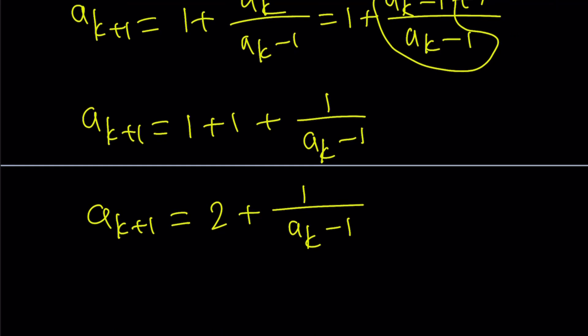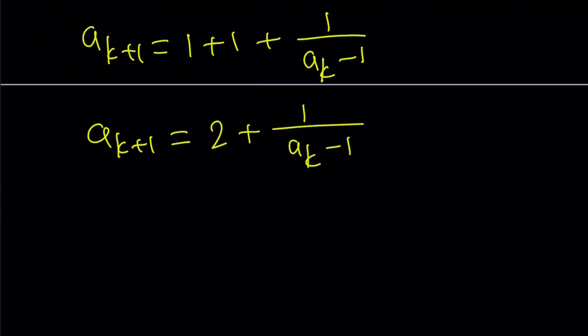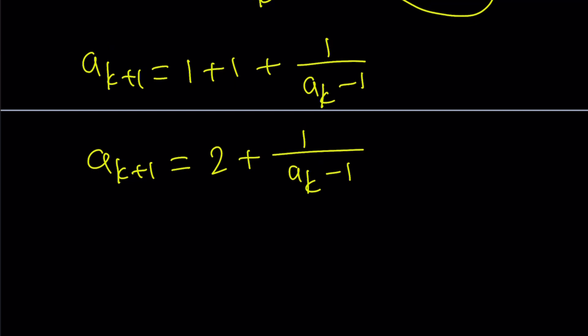So how is this useful? Well, remember, we assume that a sub k is greater than 2 and we already know a sub 1 is greater than 2. Since a sub k is greater than 2, this is going to be greater than 1, which means it's going to be positive. So this is going to be positive. 2 plus a positive number is always going to be greater than 2. And yay, we just made it work. So a sub k is greater than 2 implies a sub k plus 1 greater than 2 and we're done.